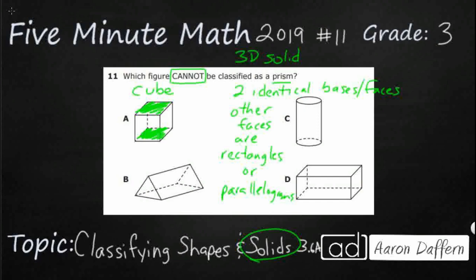Let's just pick the top and the bottom because it doesn't really matter on a cube. Those two are identical. And remember our second step is all the other faces are rectangles or parallelograms. Now you need to know that a square is a special type of rectangle.